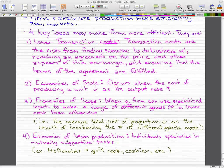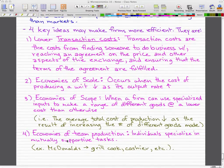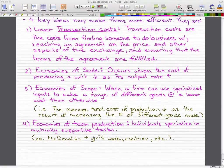Economies of team production. Individuals specialize in mutually supportive tasks. So for example, in McDonald's, we have the grill cook, the cashier. They all support each other. They're all part of a team. And we need that team production to actually get the orders to the customers.